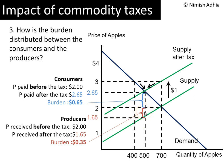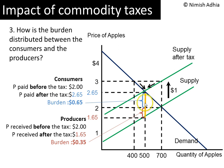We should remember that whenever there is a tax, even though it is imposed on just the producers, the burden of that tax — who is made worse off — is actually shared by consumers and producers. The line segment consisting of the consumers' burden and the producers' burden is called the tax wedge, and the significance of the tax wedge is the topic of the next video.